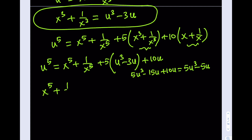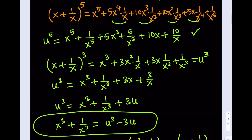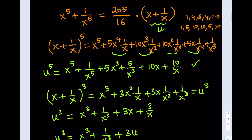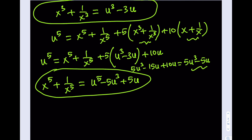Going back: u to the 5th equals x to the 5th plus 1 over x to the 5th, plus 5 times x cubed plus 1 over x cubed — which I'll replace with u cubed minus 3u — plus 10 times x plus 1 over x, which is 10u. So u to the 5th equals x to the 5th plus 1 over x to the 5th, plus 5 times the quantity u cubed minus 3u, plus 10u. Combining: 5u cubed minus 15u plus 10u equals 5u cubed minus 5u. Therefore x to the 5th plus 1 over x to the 5th equals u to the 5th minus 5u cubed plus 5u.